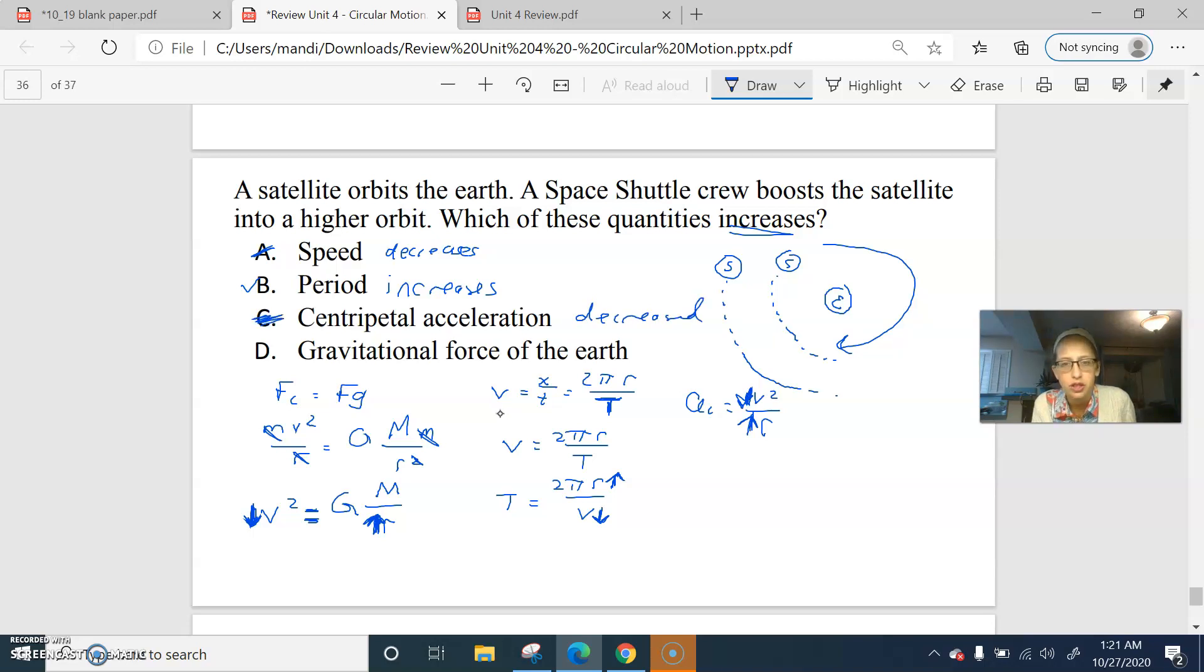And the gravitational force of the earth, Fg equals big G m m over r squared. Big G stayed the same. The mass of the Earth stayed the same. The mass of the satellite stayed the same. The radius increased, which means the force should decrease. So that decreased. So, B. Sorry, this is like one really short video.